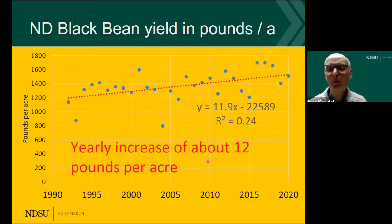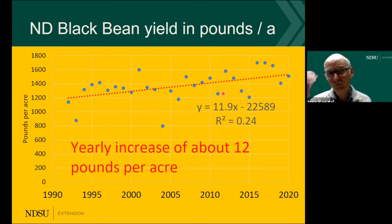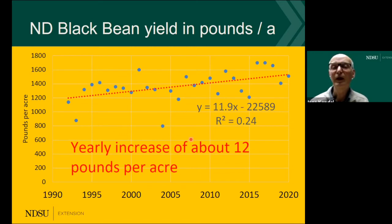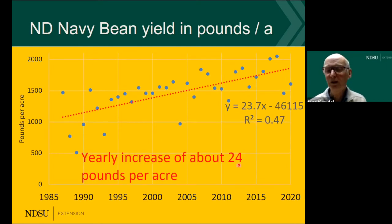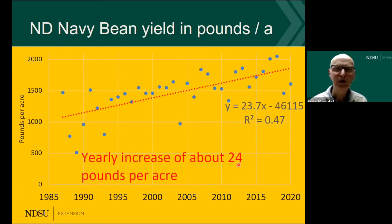You may ask about the environment — that is expressed in the blue dots, which show considerable year-to-year variation in bean yield potential based on rainfall and other events. Looking at the navy bean in the same format, the trend line shows about a 24 pounds per acre yearly increase for navy beans. Again, roughly half of that comes from management and half from genetics — the exact breakdown is uncertain, but it is probably close. The blue dots again show considerable year-to-year environmental variability.